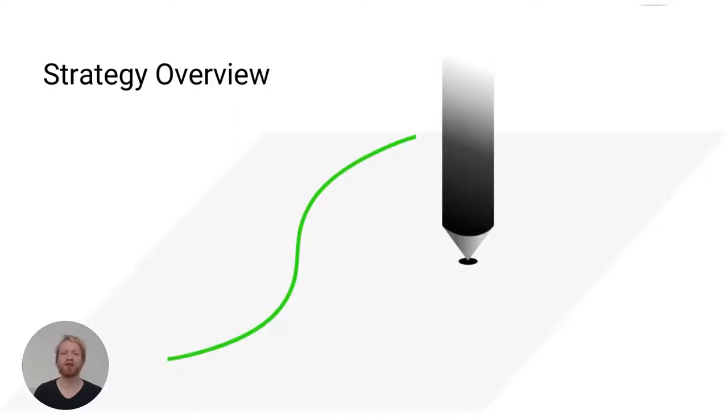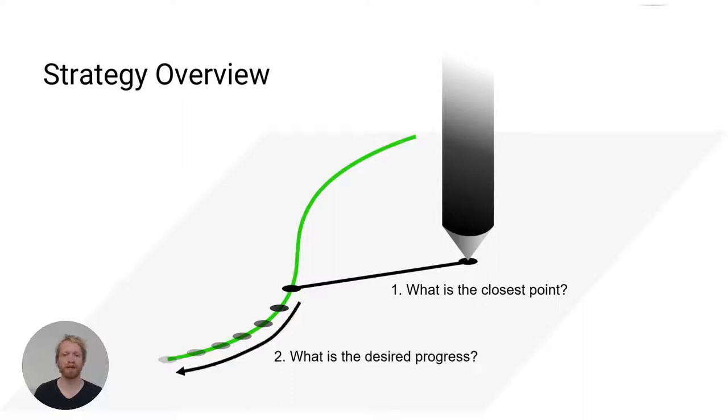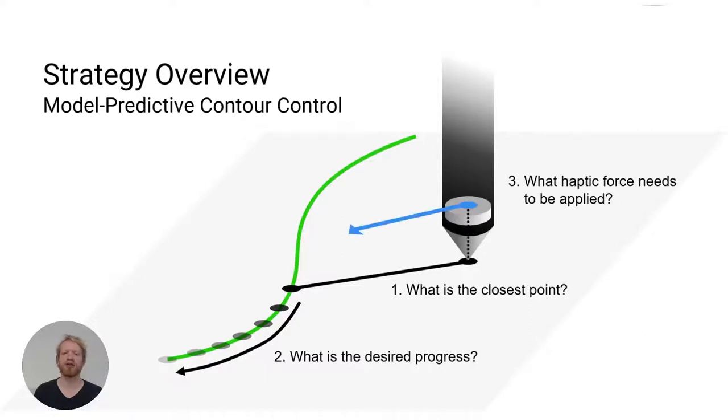For the control strategy we assume there is a desired trajectory and pen-location. We can discretize the trajectory. With a discretized trajectory some questions arise that we want to solve with our control. First, what is the closest point on the path? Secondly, what is the desired progress? These two questions are not new and answered in previous work, albeit in a different context. The final question is what haptic force needs to be applied. These questions are answered combined in a model predictive contour control formulation, which is an iterative optimization framework.